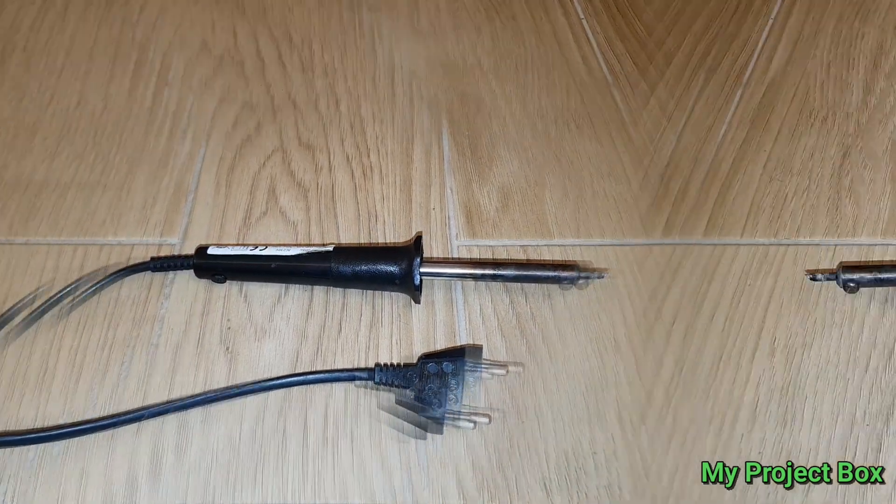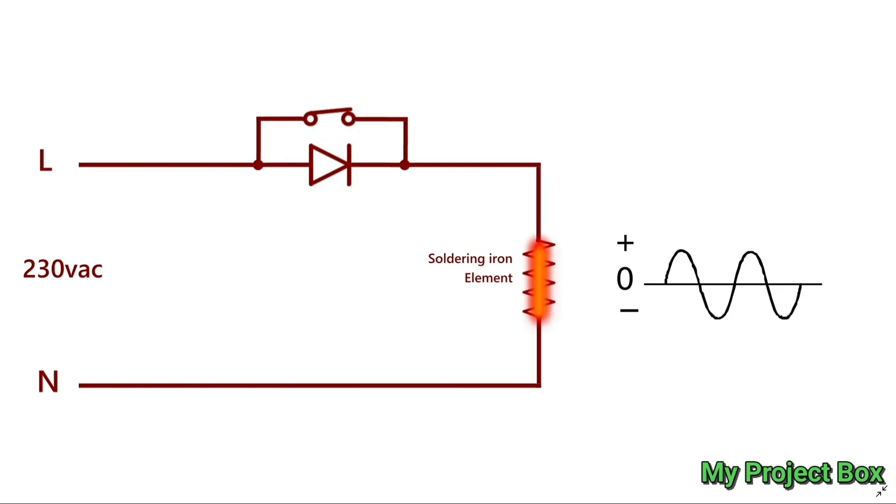As you can see here, it's actually incredibly simple to make a high-low power setting for your soldering iron. All you really need is a diode with a switch to bridge the diode out. At the moment it's on its full power setting, simply passing the full 230 volts AC to the heating element at maximum power.